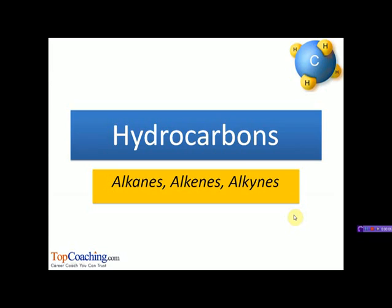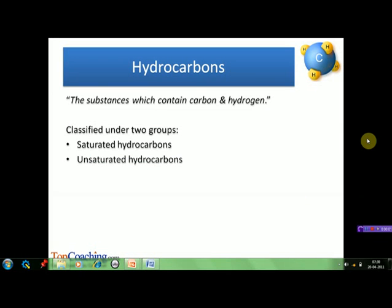Hello to all the students. Today let's begin with another topic in organic chemistry, that is hydrocarbons. In this topic we are going to discuss certain general methods of preparation, physical properties, chemical properties, and also some important applications of alkanes, alkenes, and alkynes. Hydrocarbons are those substances which are made up of carbon and hydrogen. On the basis of the type of bonds found in them, hydrocarbons can be classified into two groups: the first group is saturated hydrocarbons, in which single bonds are found, and the second group is unsaturated hydrocarbons, in which multiple bonds exist between two carbon atoms — either double bonds or triple bonds.